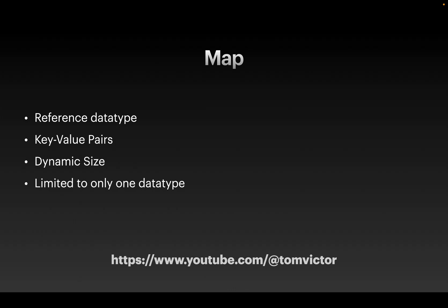Arrays have a limited size and are limited to one data type, meaning if you define a string data type, all items must be strings — that is a limitation of arrays. Maps give us more flexibility, which is why we use them in Go as a data structure. Let's look at the syntax.